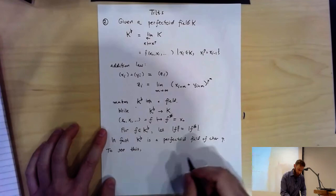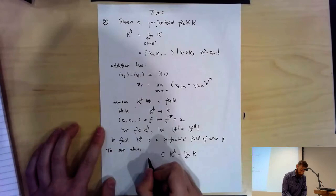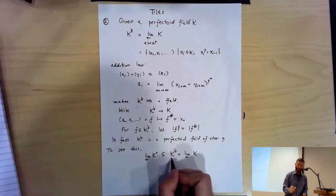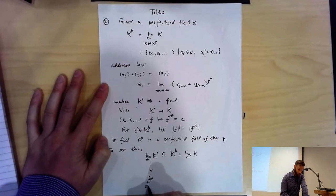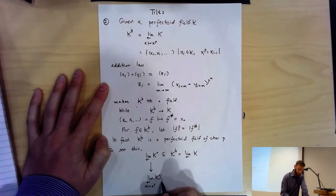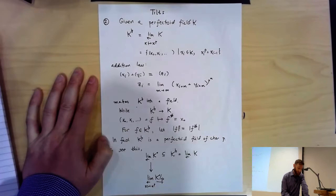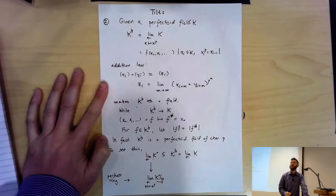Inside K-tilt — the inverse limit along K — I could also take the inverse limit along K-circ (the ring of integers) under the same transition map. This projects onto the inverse limit along Frobenius of K-circ mod P. Now this right side is a ring of characteristic P, so Frobenius is a ring homomorphism there, and the inverse limit is a ring. In fact it's a perfect ring — Frobenius is surjective by design.